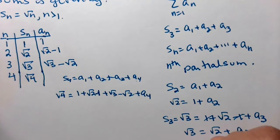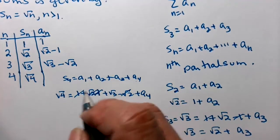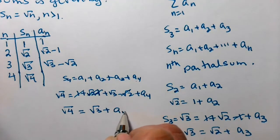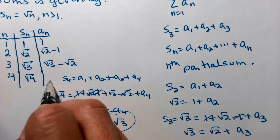So cancel everybody who cancels. You should have positives and negatives of everybody. So I have the square root of 4 equals the square root of 3 plus a sub 4. That means a sub 4 is equal to the square root of 4 minus the square root of 3. Of course, that should go right up here.